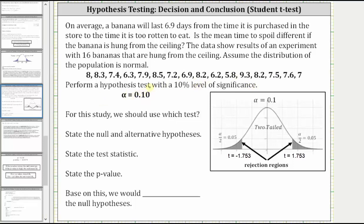First question is, from this study, we should use which test? Because the population standard deviation is unknown, we use a student t-test for a population mean, or for short, just a t-test for a population mean.